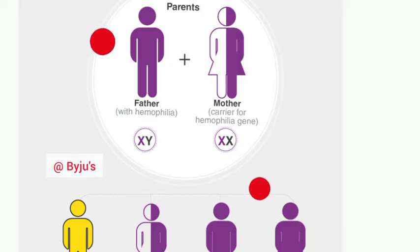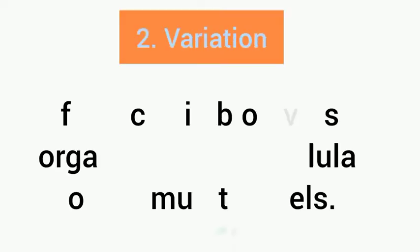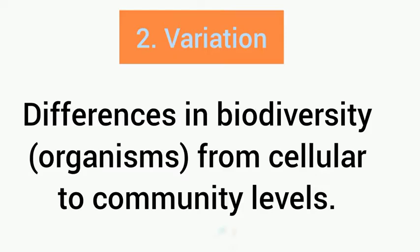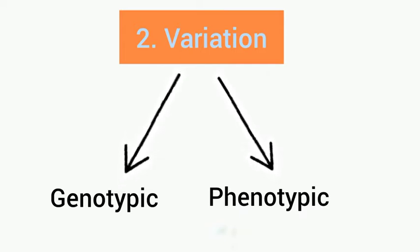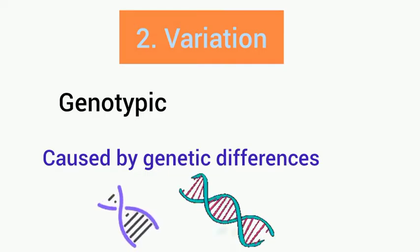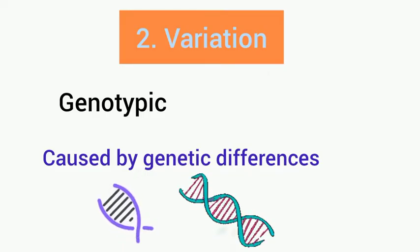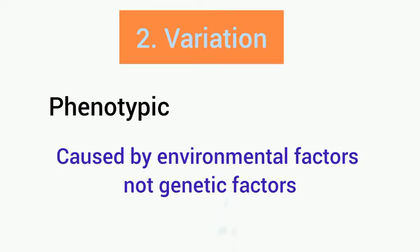When Gregor Mendel was doing his experiments, you could see the passing of traits. For variation — variation is simply the differences in biodiversity from cellular to community levels, differences among species and between two different organisms. We have genotypic variation and phenotypic variation. Genotypic variation is caused by genetic differences — that is, genetic factors between the DNA of organisms.